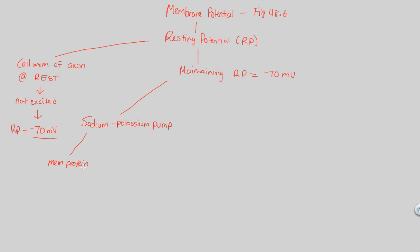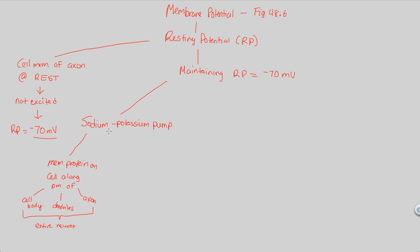The sodium-potassium pump is found on the membrane of the axon — in fact on the entire cell, along the plasma membrane of all three structures we've talked about. The cell body contains sodium-potassium pumps, dendrites have sodium-potassium pumps on their plasma membrane, and axons definitely have sodium-potassium pumps all along their structure. Essentially, the entire neuron has sodium-potassium pumps on it.